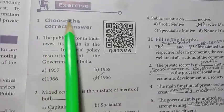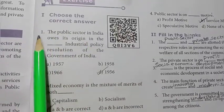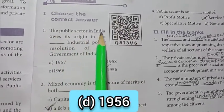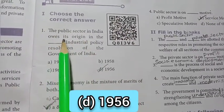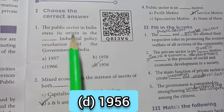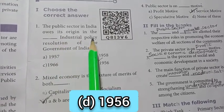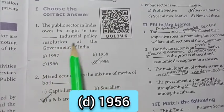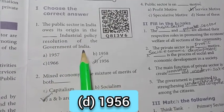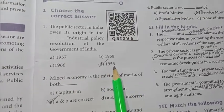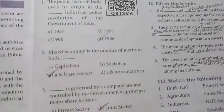Room number 1, choose the correct answer. First one: the public sector in India owes its origin in the dash Industrial Policy Resolution of the Government of India. The answer is option D — 1956.